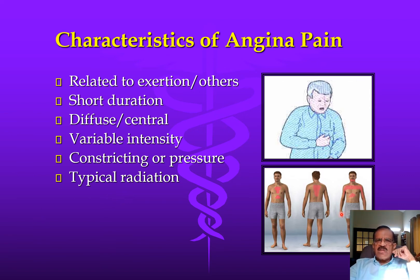When the patient is describing the pain, pay attention to their gestures too — they may make a fist to show it is constricting, or press on the sternum to show it feels like pressure. The pain has typical radiation. It could be felt in the epigastrium, especially in inferior wall ischemia particularly in women, or in the most typical retrosternal area. It may radiate to both shoulders, or to the jaw — central chest pain going to the jaw is very typical of angina.